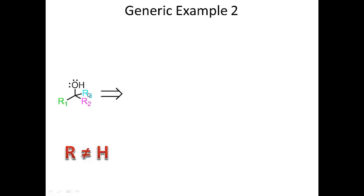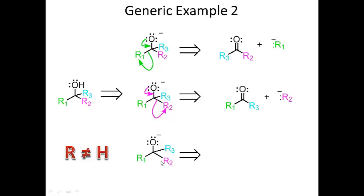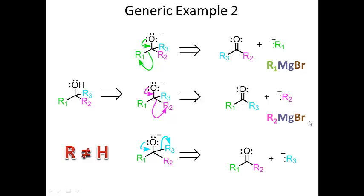Here's another generic example. R cannot be hydrogen; R1, R2, and R3 are three carbon-containing groups. Working backwards from alcohol to tetrahedral intermediate: if I eliminate R1, I get that ketone plus R1 with a pair of electrons. If I eliminate R2, I reform the pi bond and get a ketone plus R2. If I eliminate R3, I get a ketone plus R3. For each pathway, the Grignard is just that group with MgBr added — R1-MgBr, R2-MgBr, or R3-MgBr.